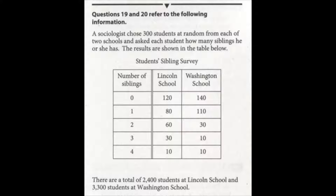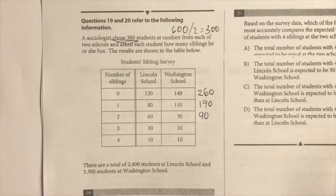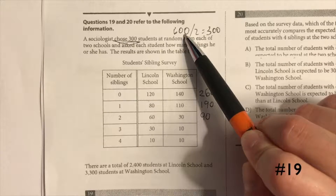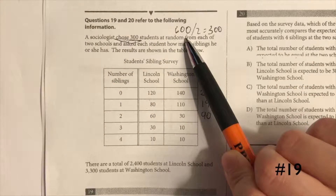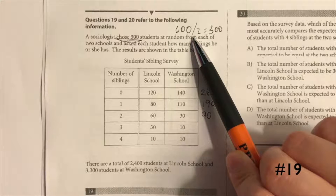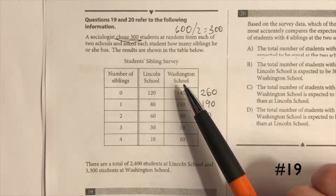Questions 19 and 20 both refer to a provided table and chart. A sociologist chose 300 students at random from each of two schools and asked each student how many siblings they have. There are 2,400 students at Lincoln School and 3,300 at Washington School. Question 19 asks: what is the median number of siblings for all the students surveyed? The median is the middle value when data is ordered. Our total is 600 students — 300 from each school — so the middle falls between the 300th and 301st data points.